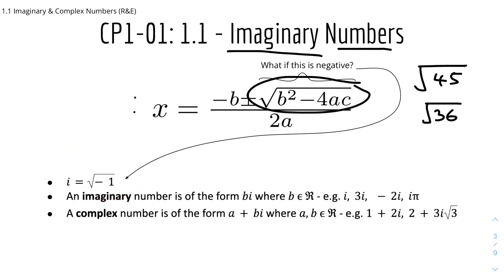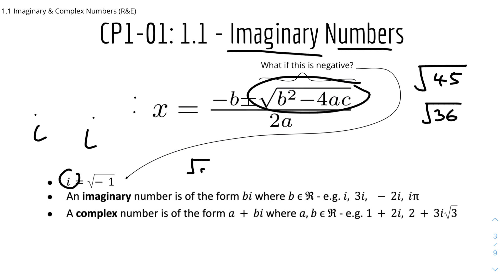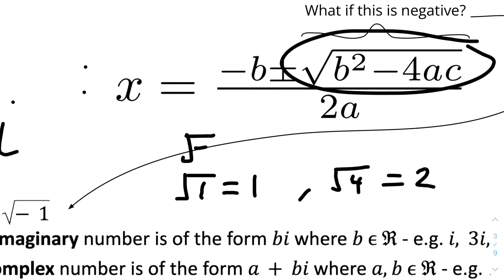So i is denoted as the imaginary unit — you can just write it as i. Basically, i equals the square root of negative 1. Just let that sink in — it's the square root of a negative number. We didn't look into square roots of negative numbers in IGCSE because it gets quite confusing, but in Further Maths we do. So the square root of 1 is 1, the square root of 4 is 2, and the square root of negative 1 is equal to i.